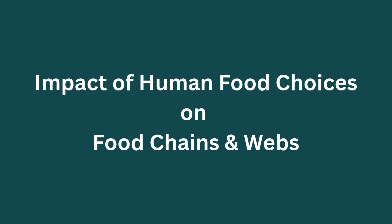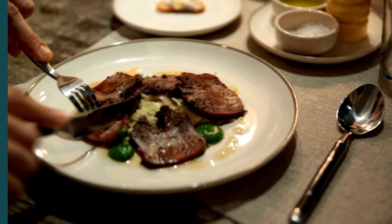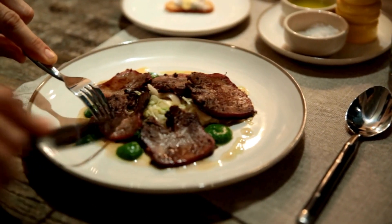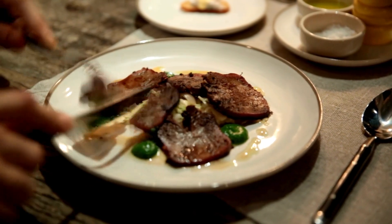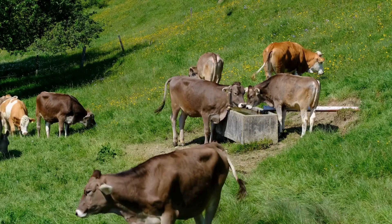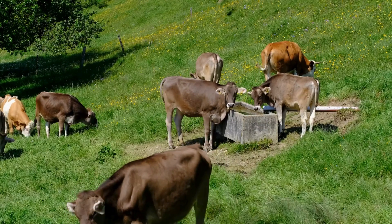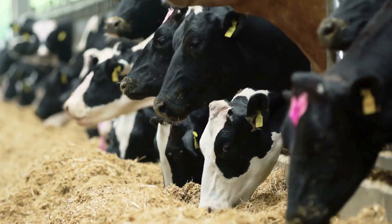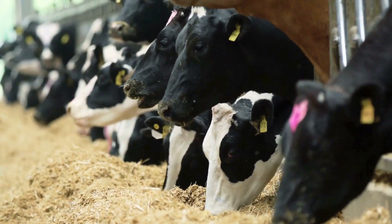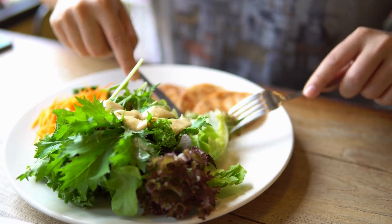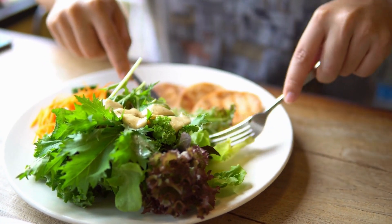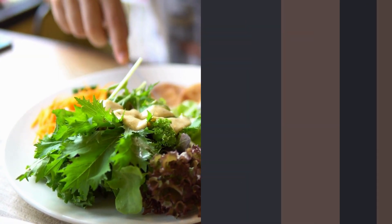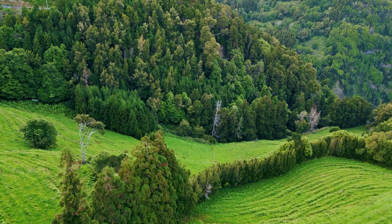Did you know that your food choices can change the food web? More meat consumption means more livestock farming, which requires land and water. This can lead to deforestation and loss of wildlife habitats. Plant-based diets require fewer resources and may help protect biodiversity.